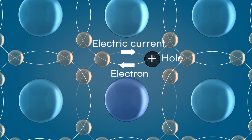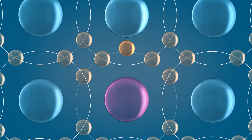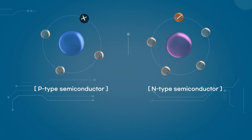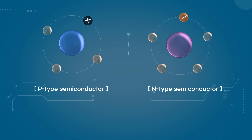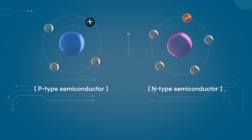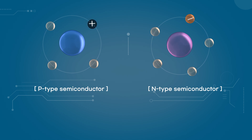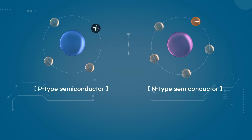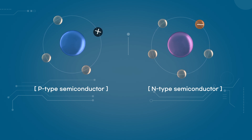Their movement is treated as if they carry a positive charge. When an element with one more electron than silicon is added, the extra electron can move freely, allowing current to flow. A semiconductor doped with an element having one fewer electron is called a P-type semiconductor, with P representing positive. A semiconductor doped with an element having one more electron is called an N-type semiconductor, with N representing negative.